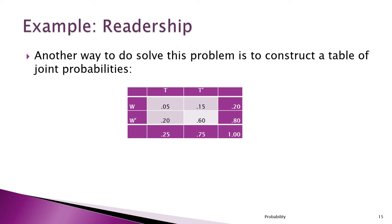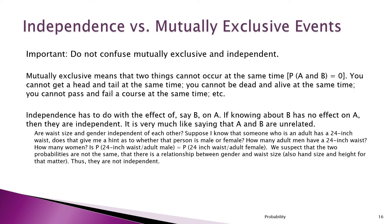It's very important to understand the difference between independence and mutually exclusive events — don't confuse them. Mutually exclusive simply means the probability of A and B is zero: they can't occur together. You can't have a head and tail at the same time; you can't pass and fail a course at the same time. Those are mutually exclusive.